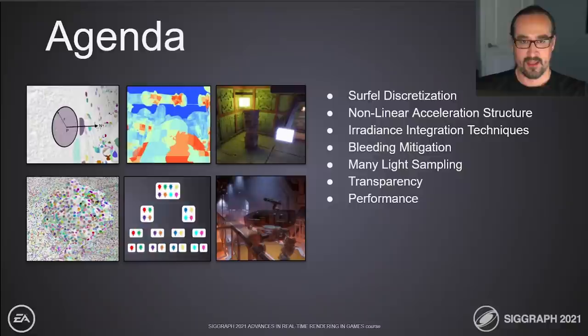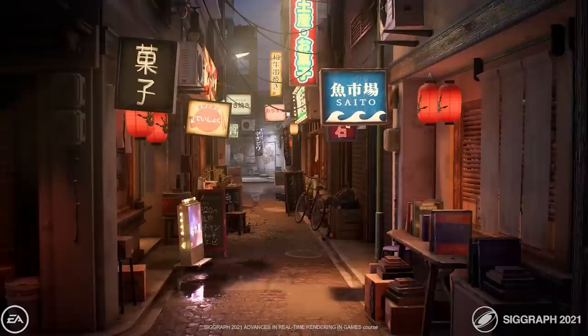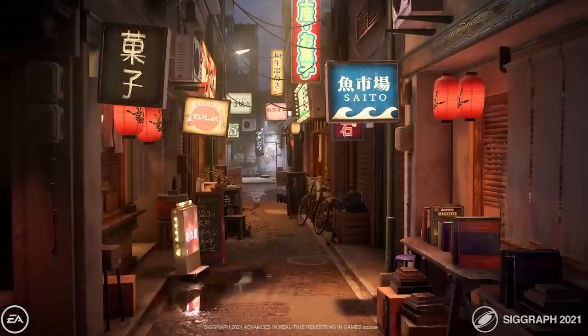Today we'll talk about how we discretize the scene into circles, describe our non-linear acceleration structure, how we integrate irradiance, how we mitigate artifacts, sample scenes with large numbers of lights, and handle transparency. Finally, we'll look at performance numbers. Before we begin, we should mention that this technique is still very much in development, and as such we expect to see significant improvements as development continues. So let's get into the algorithm.